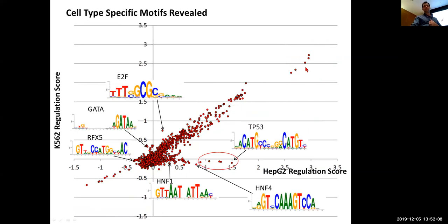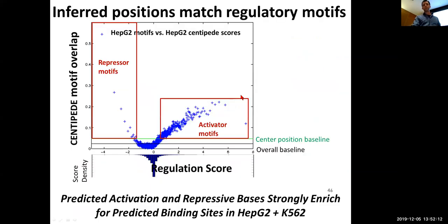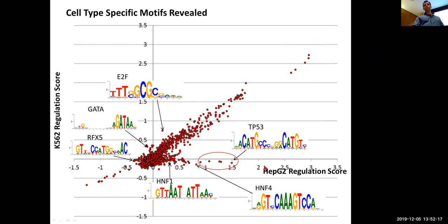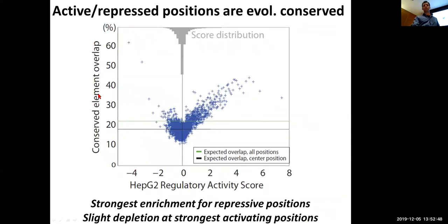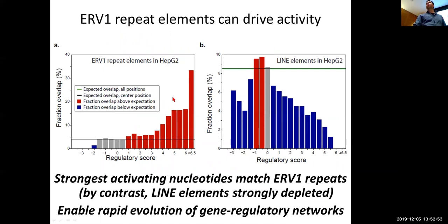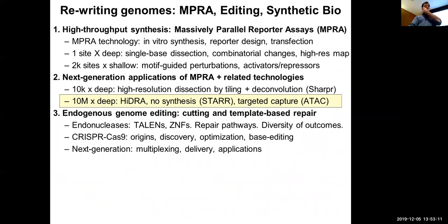Off-diagonal entries reveal cell-type-specific activity: TP53 and HNF4 drive HepG2 but not K562; immune regulators drive K562 but not HepG2. Activator motifs drive large increases in regulatory score; repressor motifs drive decreases. Repeat elements are among the strongest drivers of gene expression — they've been optimized for strong self-propagation, so it makes sense they're highly activating. We're now doing 10,000 regions at a time with tiling and high-resolution inference.